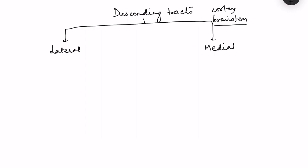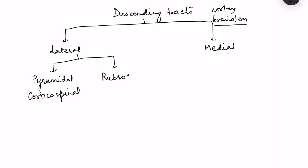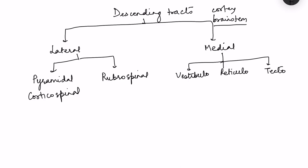There is another way of classifying descending tracts: pyramidal and extrapyramidal tracts. In the lateral descending tracts we have the corticospinal tract, also known as the pyramidal tract, and the rubrospinal tract. In medial descending tracts we have the vestibulospinal tract, reticulospinal tract, and tectospinal tract. The vestibulospinal tract has medial and lateral divisions, and the reticulospinal tract has pontine and medullary divisions.